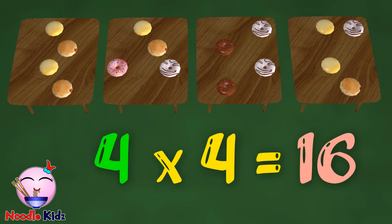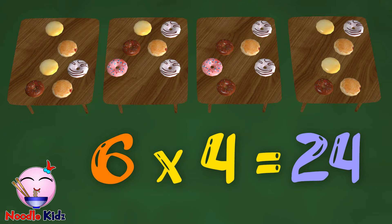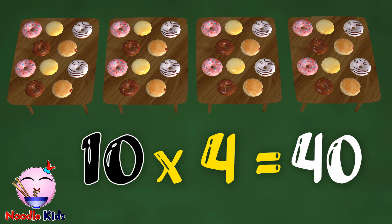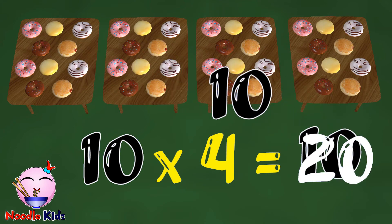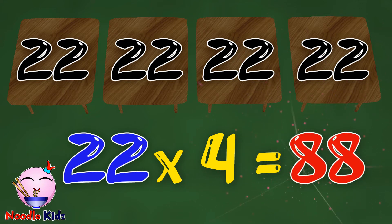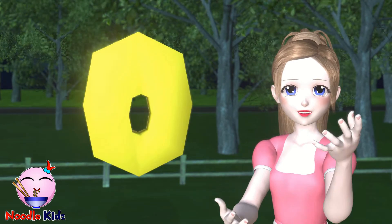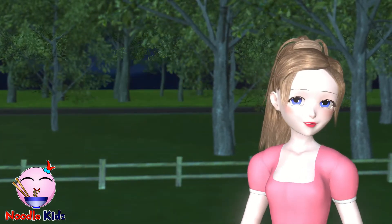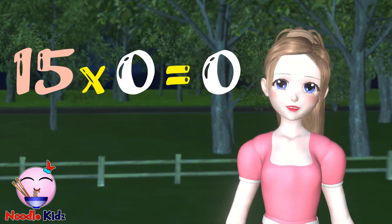Four times four is sixteen. Five times four is twenty. Six times four is twenty-four. Ten times four is forty. Times four means adding the same number four times. Yes, the answer is eighty-eight. What about multiplying by zero? Any number multiplied by zero is always zero.